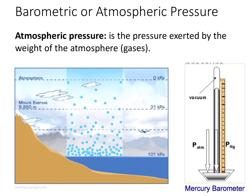All the gases that make up our atmosphere press down on us on the surface of the Earth. Depending on where you are — if you're at sea level or at the top of Mount Everest — the amount of atmosphere or gases above you is going to be different. The less gas you have pushing down on you, the less pressure is being exerted on you versus down at sea level, where there's going to be significantly more atmosphere pressing down on you.